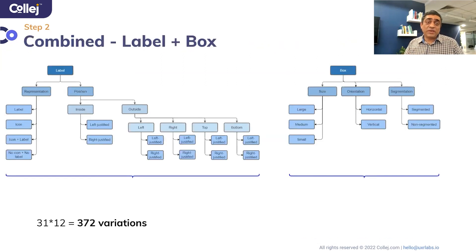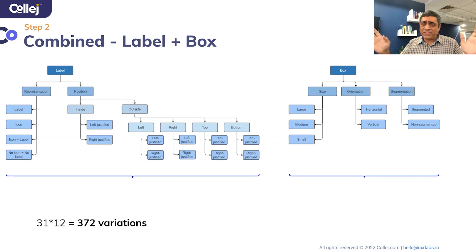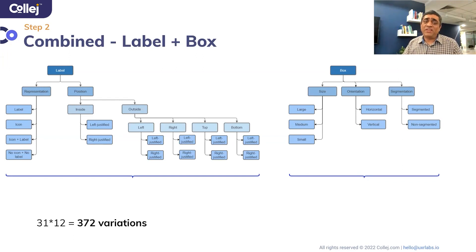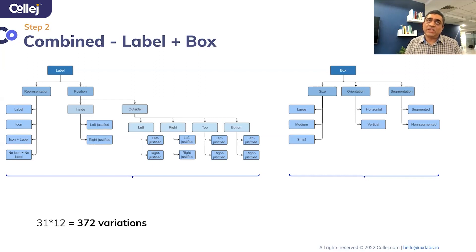We'll treat the third variable — the input prompt — as relatively standard. Just by looking at the label and the box variables combined, you would already have 372 variations. So now let's start thinking about how we're going to solve the problem.